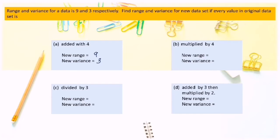When every value in the original data set is multiplied by 4, the new range is 4 times 9 equals 36. New variance is 4 squared times 3 equals 48.